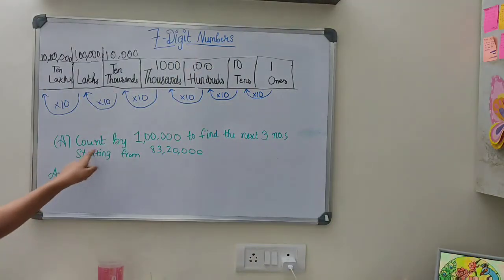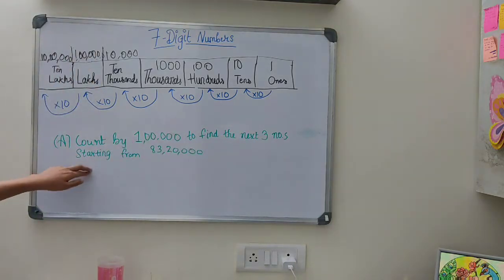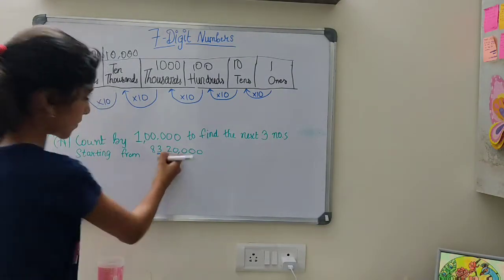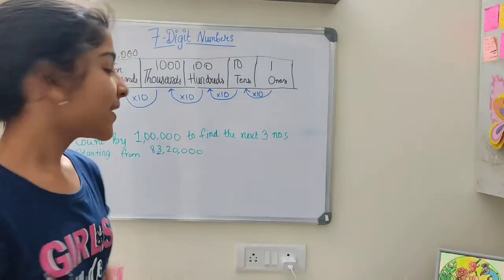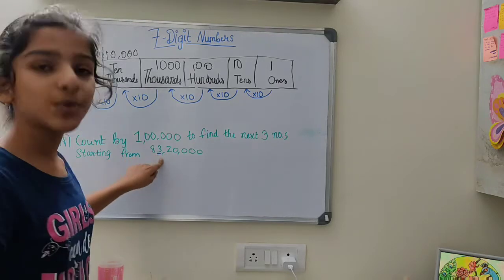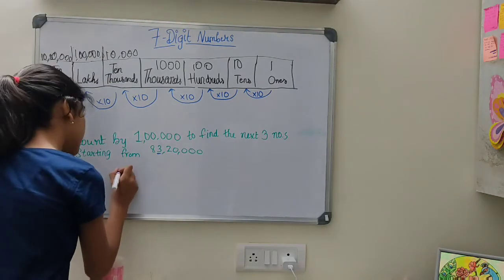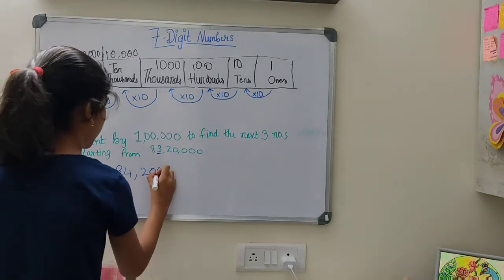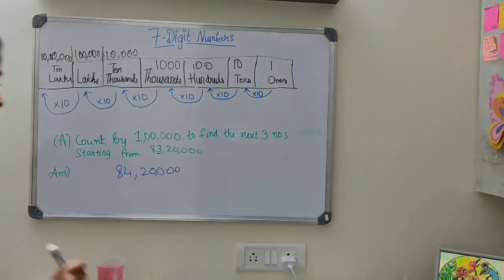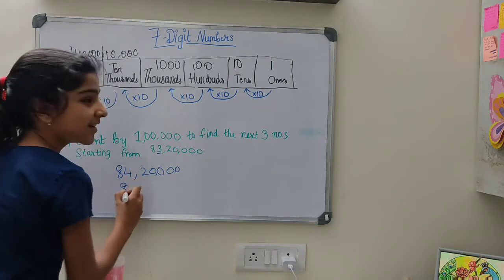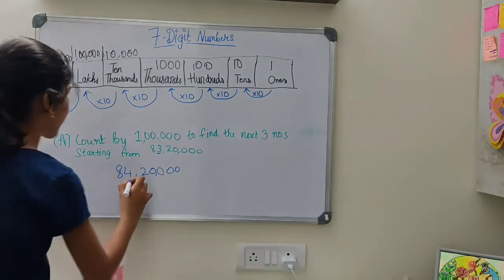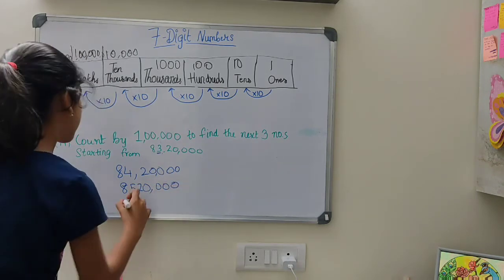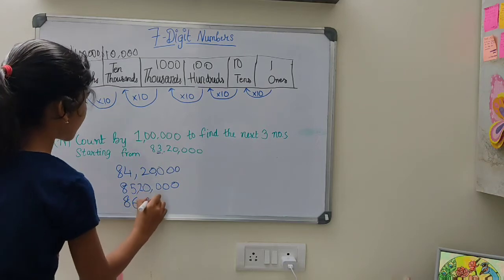Now I have a task for us: count by 1 lakh to find the next three numbers, starting from 83 lakh 20,000. Which is the 1-lakh position in this number? To find it, we add 1 lakh — that is, we add 1 to that particular place. So the first number will be 84 lakh 20,000, because 3 plus 1 is 4. Next will be 85 lakh 20,000. And finally, 86 lakh 20,000.